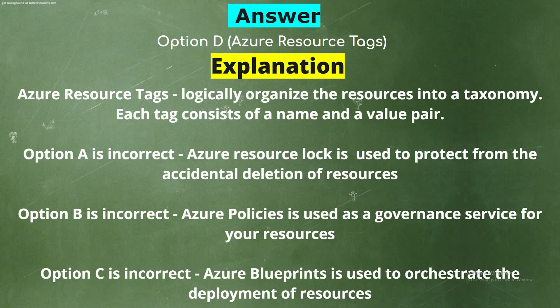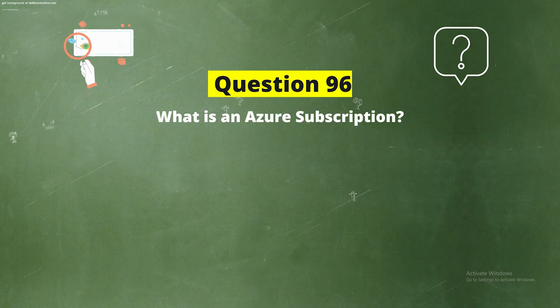Option A is incorrect — Azure Resource Lock is used to protect from the accidental deletion of resources. Option B is incorrect — Azure Policies is used as a governance service for your resources. Option C is incorrect — Azure Blueprints is used to orchestrate the deployment of resources.